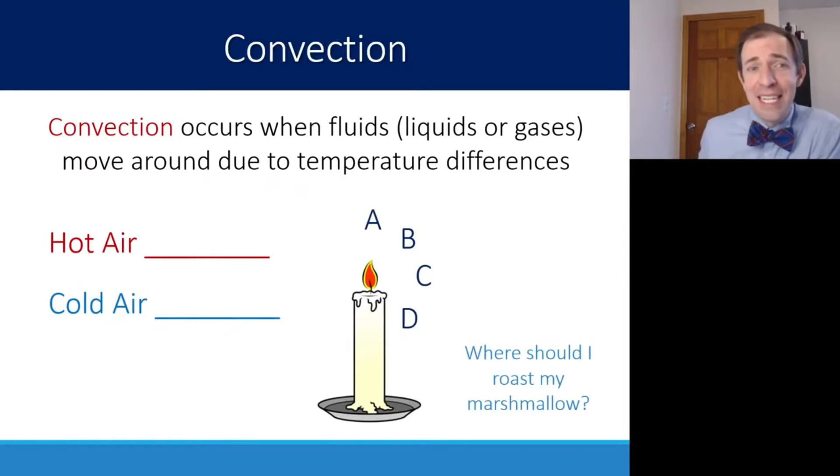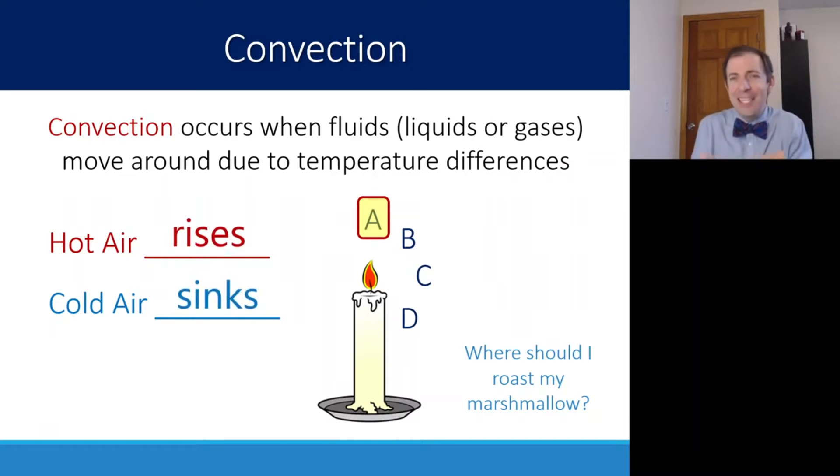Our second form of heat transfer is known as convection. Convection occurs when fluids, whether a liquid or a gas, move around due to a temperature difference. So hot air is going to go up in this case. If I want to roast my marshmallow, the best place to do it is right above the candle because hot air rises and cold air sinks. And if you look just at a candle, you can kind of see that the hot air is pulling that candle flame upward, but you don't really see the heat necessarily. Hot air doesn't necessarily look different than cold air.